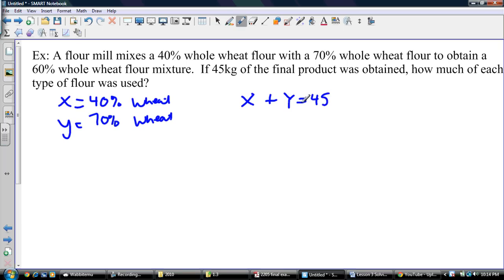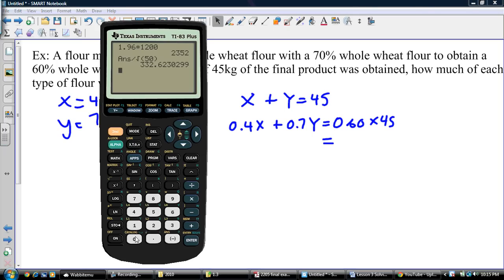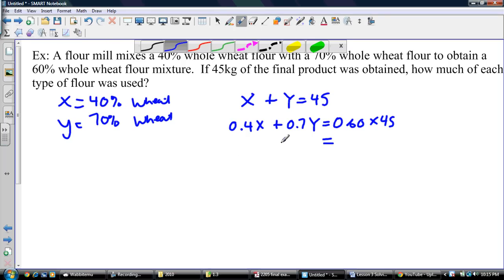All right, but we also know that we get a 60% whole wheat flour mixture, so 60% of this 45 is whole wheat flour. So if we go 0.4X plus 0.7Y, we know that's going to be equal to 60% times 45, or we get 0.6 times 45, 27. So we get 27. So our two equations are these.